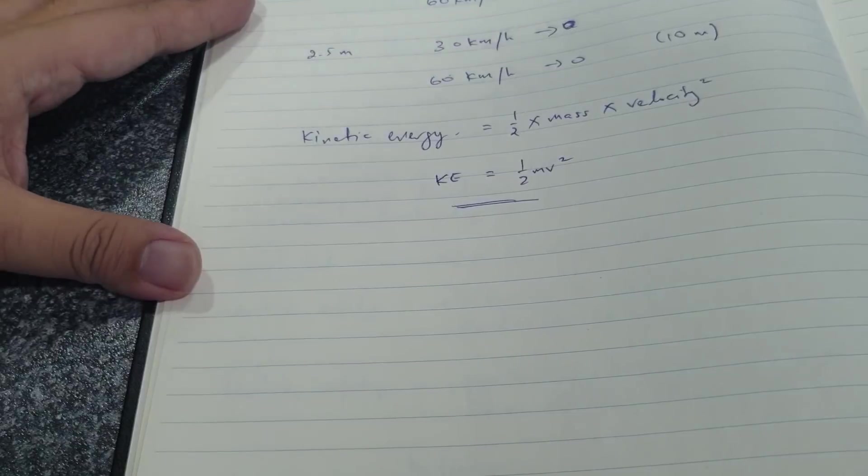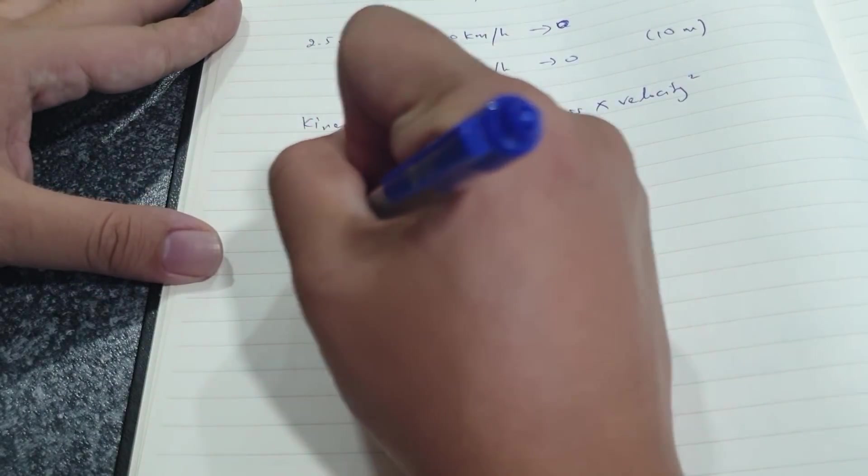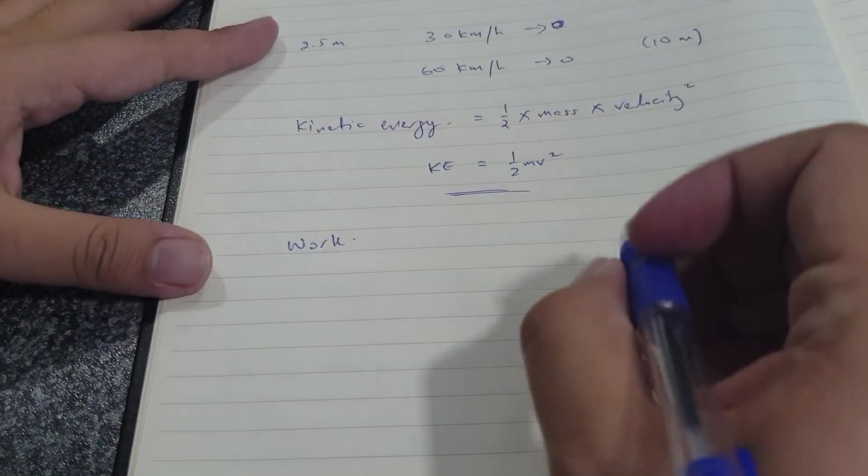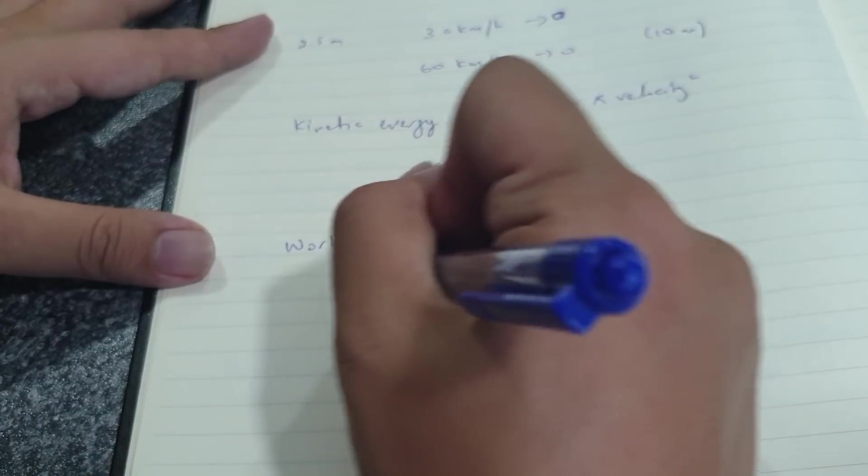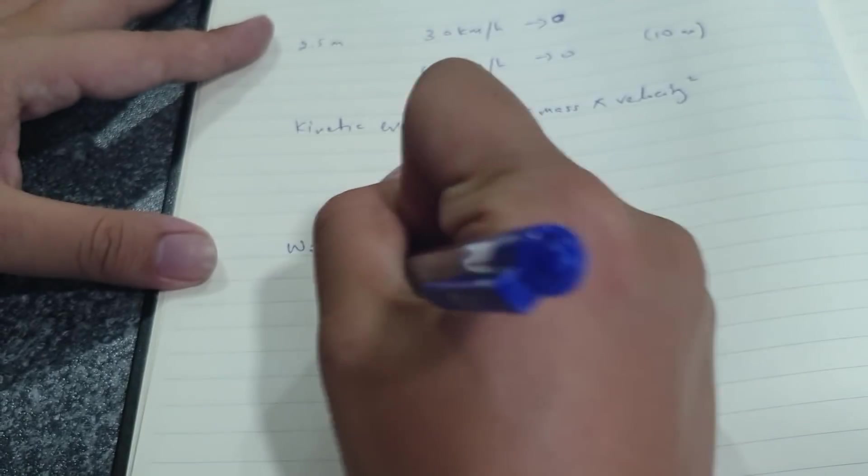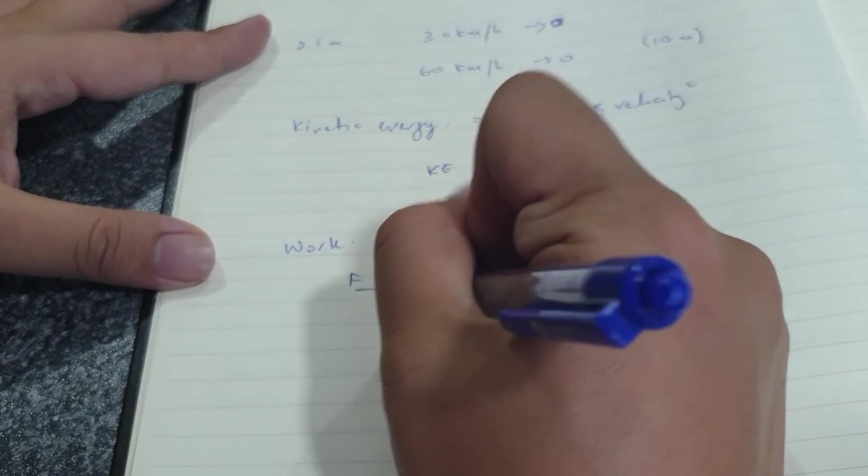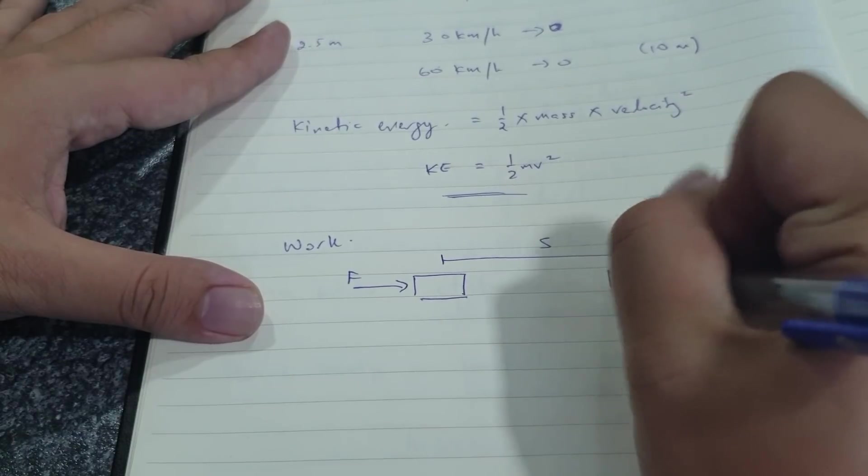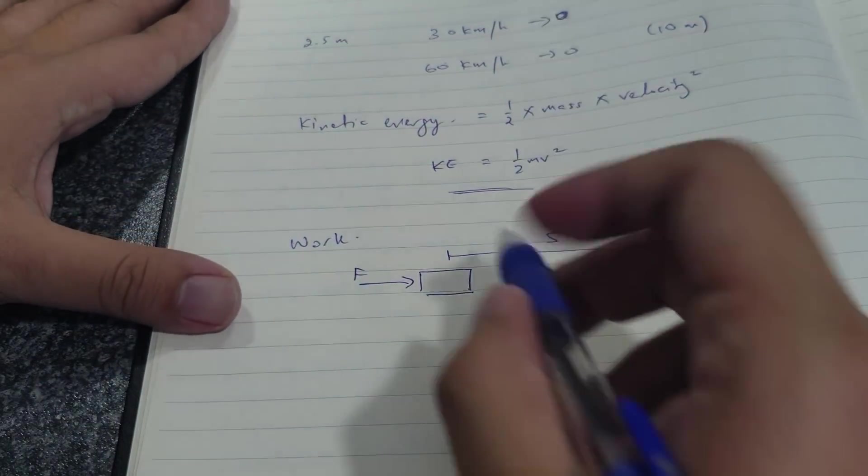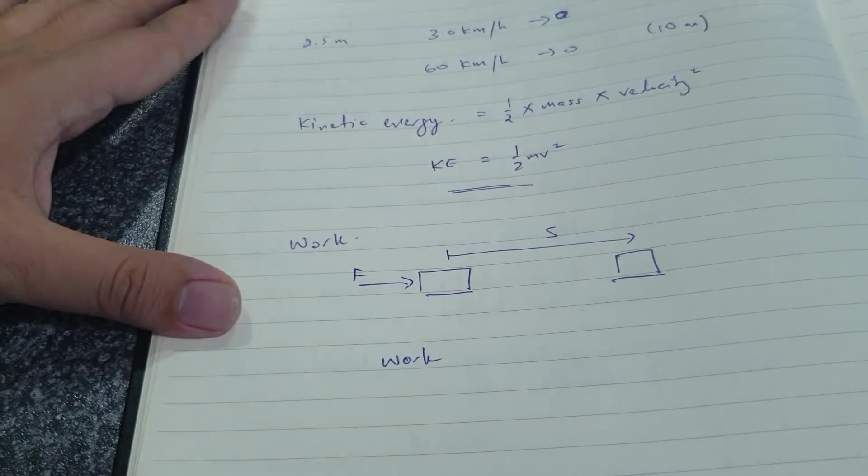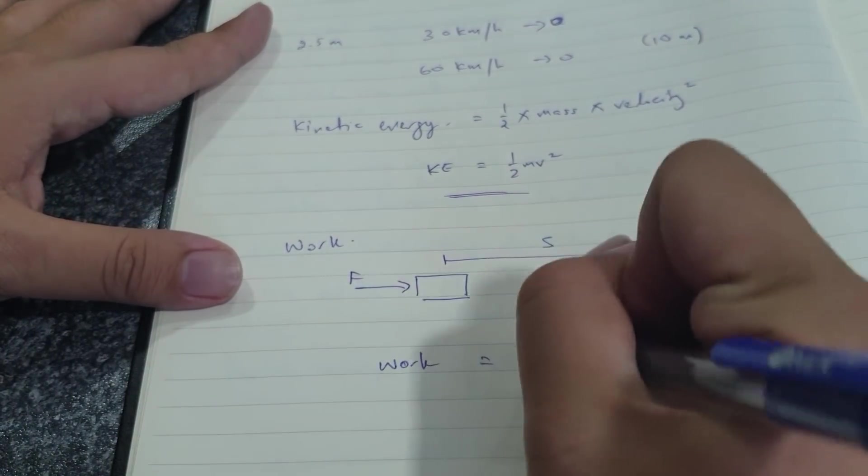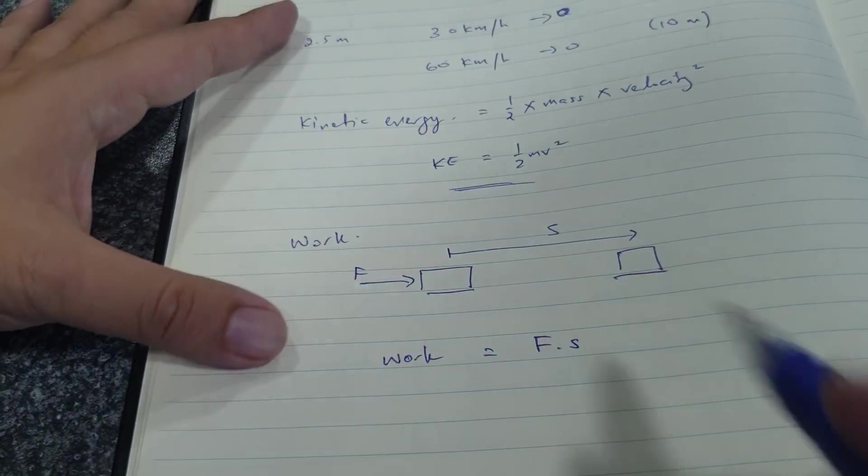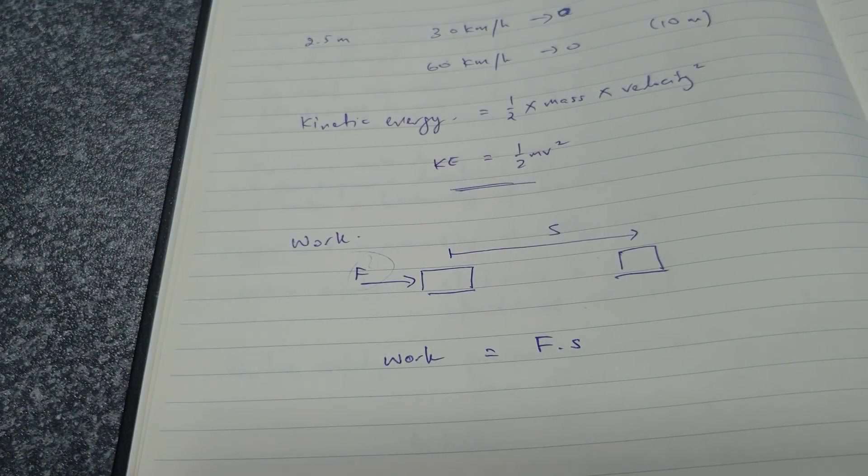Now the next concept we want to talk about is work. In physics, when you apply a force F to move an object over a distance S, the work done by this force is force times distance. This assumes that the force is constant.